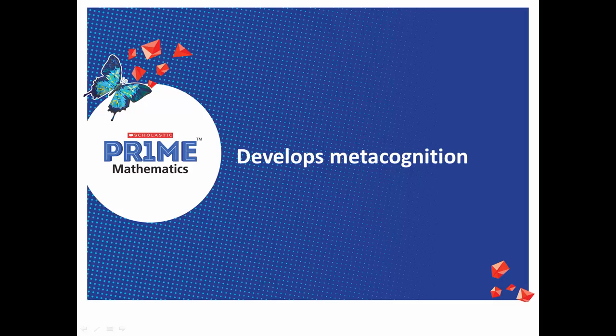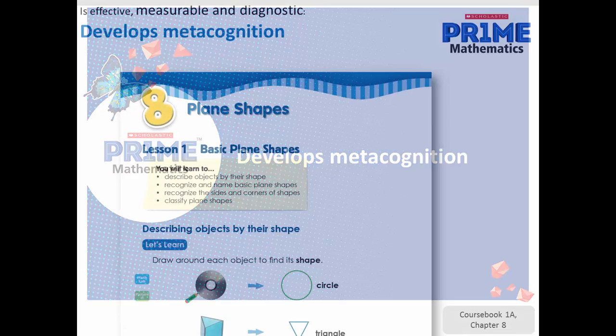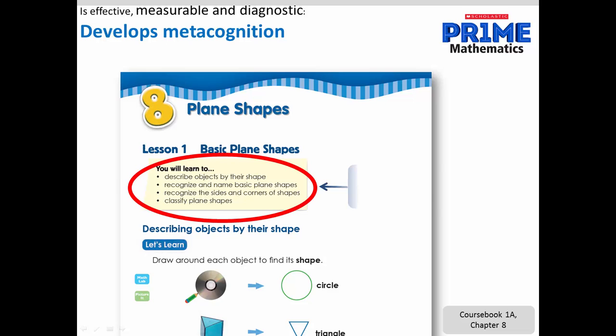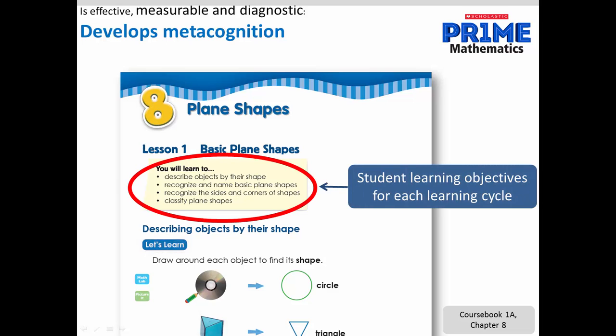Why does Prime develop metacognition? All the way through Prime, students are expected to be conscious of their mathematical thinking and be able to explain it. To help students be aware of their learning, at the beginning of each Prime lesson, students are told what they will learn. And at the end of the lesson, they may look back on these objectives and reflect.